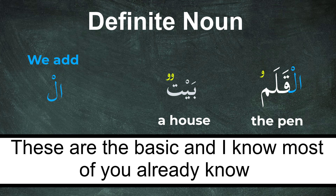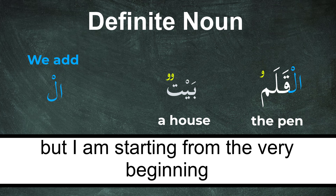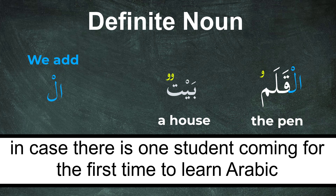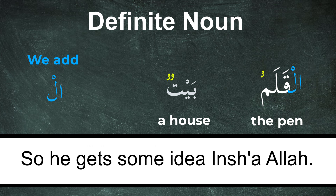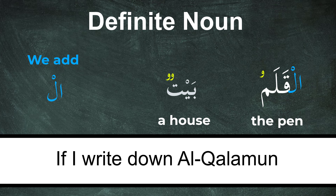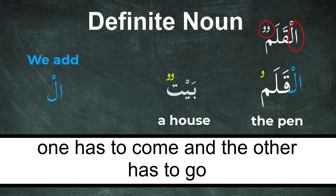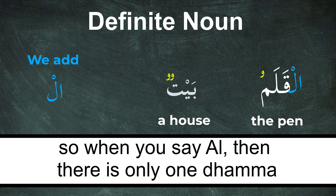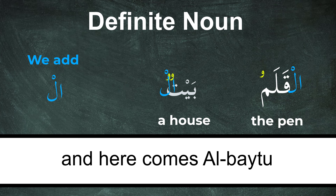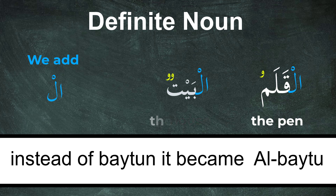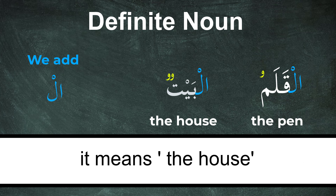But these are the basics — I know most of you already know. But I am starting from the very beginning in case there is a student who is coming for the first time to learn Arabic, so that he gets some idea. If I write 'Al-Kalamun', that is wrong, because Tanwin and Al cannot coexist. One has to come and the other has to go. So if you say Al, then only one vowel — and here comes 'Al-Baytu'.